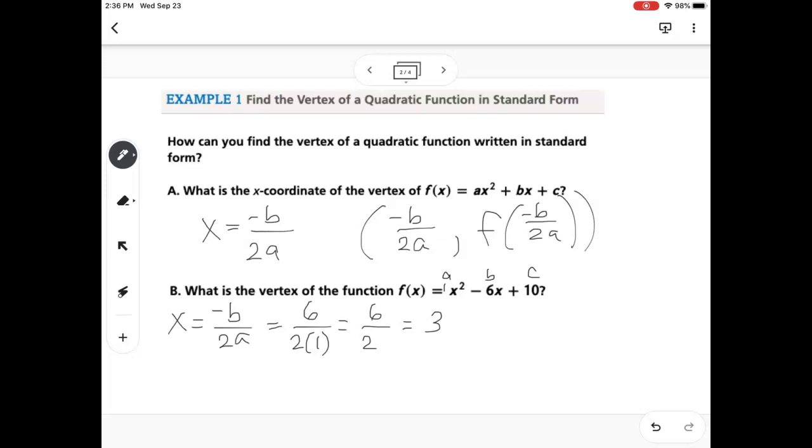Now to find my y-coordinate, I'm going to take f of 3. So that means I'm going to plug 3 everywhere there's an x into my equation. So this would be 3 squared minus 6 times 3 plus 10. So if I do that, I get 1. So that means that my vertex is 3, 1.